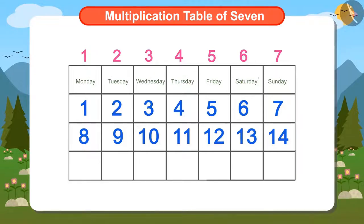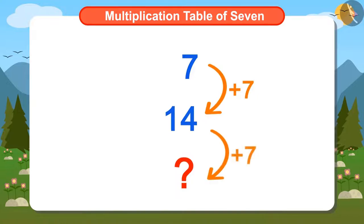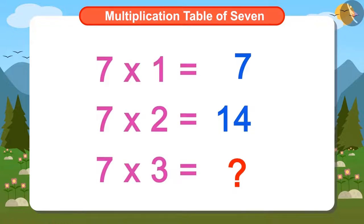Ayushman has understood that just like he added 7 to the date 7th to find the date of next Sunday — 14th — similarly, by adding 7 to 14, he will get the date of the following Sunday. Suddenly, Ayushman remembered that he had done such a calculation earlier too. We have done this kind of calculation while learning multiplication tables. So, is this also a table? Oh yes, this is the multiplication table of 7!